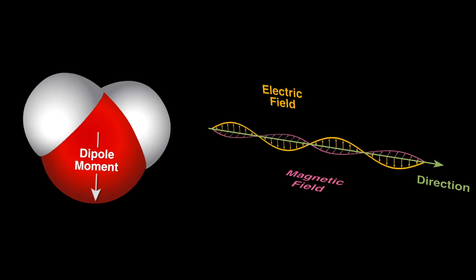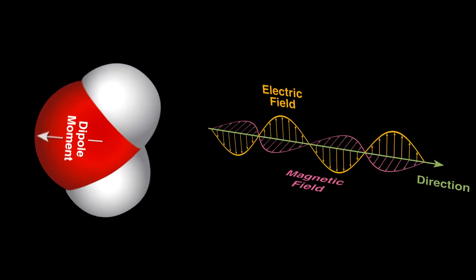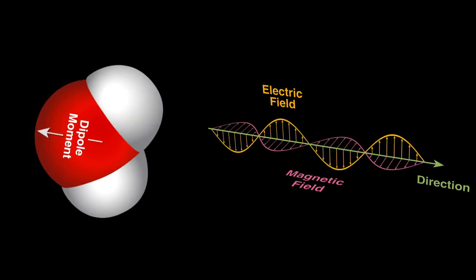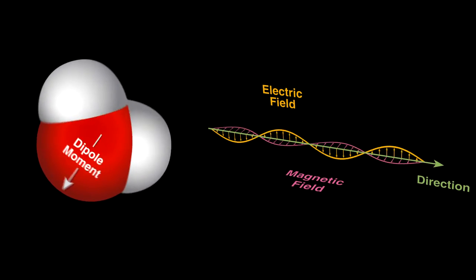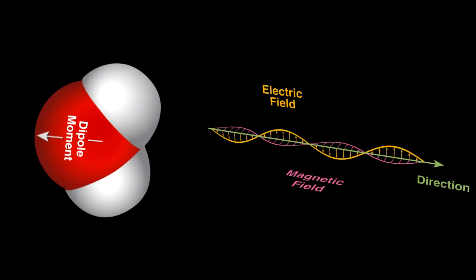Water will try to align with the radiation's electric field. The changing field rocks the water molecules back and forth rapidly, and molecular friction from this creates heat as the motion disrupts the hydrogen bonds between neighboring water molecules.